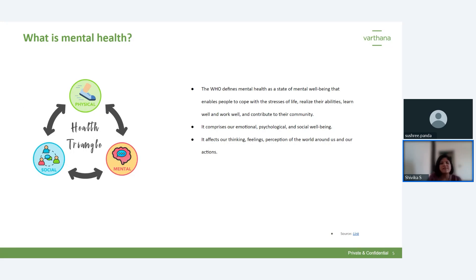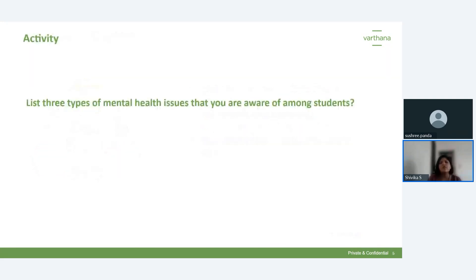Let's start with a quick activity. I'll request you to list down three types of mental health issues that you see in your students or are aware of. Someone wrote 'state of well-being — how a person is able to cope with different things in their life,' and taking decisions, feeling happy in whatever you do, and the ability to cope and manage even when not happy.